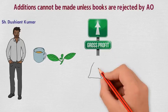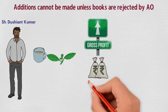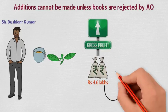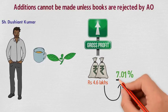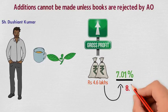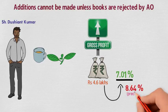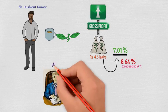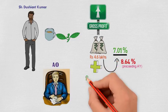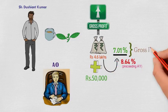The gross profit had been shown at Rs 4.6 lakhs, which worked out to 7.01% as against 8.64% shown for the immediately preceding accounting year. The AO made an addition of Rs 50,000 on account of low gross profit.